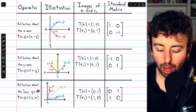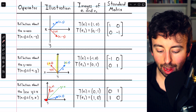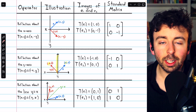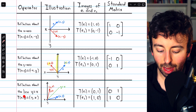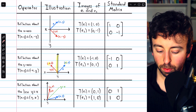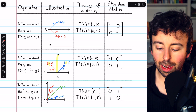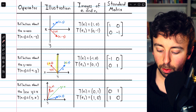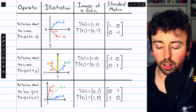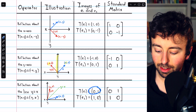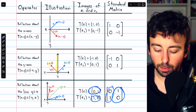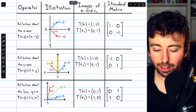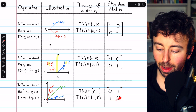Finally, reflection about the line y = x. You may recognize this as what it looks like when you have the graph of a function and the graph of its inverse, because what the transformation does is just swap x and y: T(x, y) = (y, x). When we take the standard basis vectors and put them through this transformation, the image of (1, 0) is (0, 1), and the image of (0, 1) is (1, 0). We take these images to build the columns of our standard matrix. So reflection about the line y = x in R-squared is just multiplication by this standard matrix.